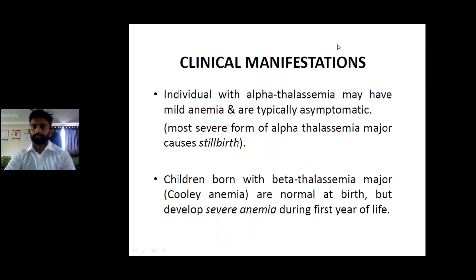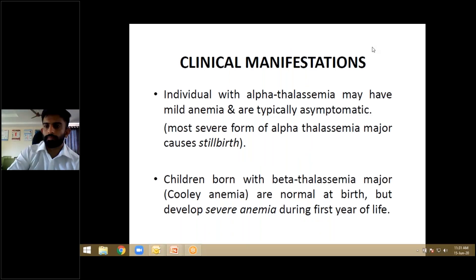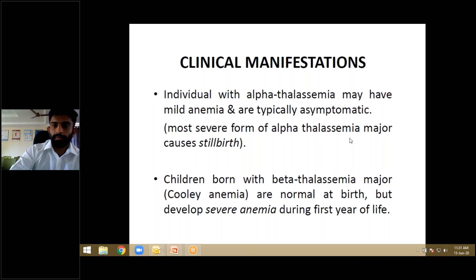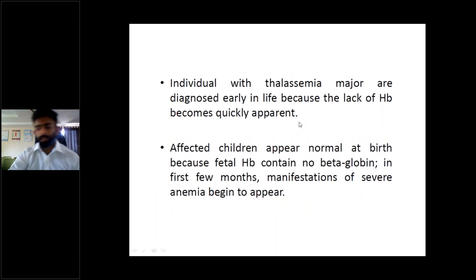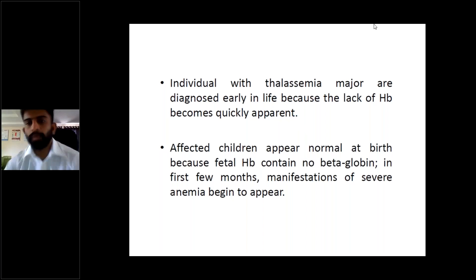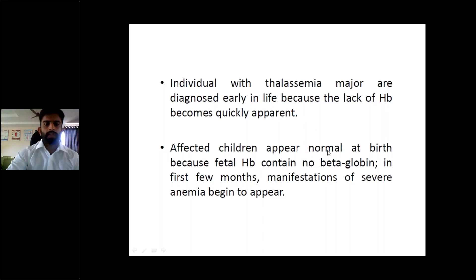Clinical manifestations: individuals with alpha thalassemia may have mild anemia and are typically asymptomatic. The most severe form — alpha thalassemia major — causes stillbirth, which is hydrops fetalis. Children born with beta thalassemia major (Cooley's anemia) are normal at birth but develop severe anemia during the first year of life, once fetal hemoglobin decreases. Individuals with thalassemia major appear normal at birth because fetal hemoglobin contains no beta-globin. In the first few months, manifestations of severe anemia begin to appear.